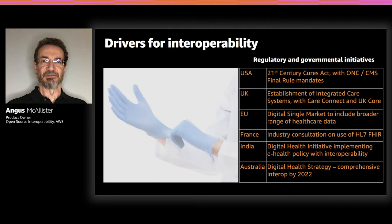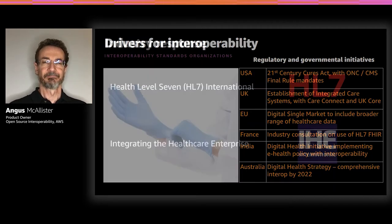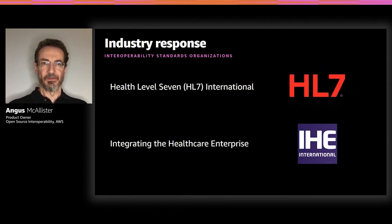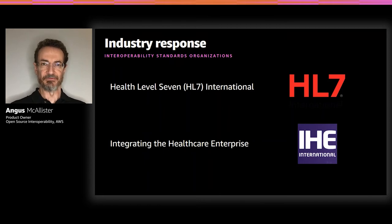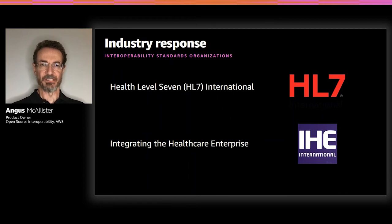The industry's response involves two major bodies historically involved in creating healthcare data standards. The first is Health Level 7, or HL7, whose standards include HL7 v2 — widely adopted but with challenges — its successor HL7 v3, and most recently FHIR, or Fast Healthcare Interoperability Resources. The second organization is IHE, or Integrating Healthcare Enterprise, historically focused on imaging data exchange, specifically for radiology. These two standards organizations have increasingly collaborated to produce complementary standards that work with one another.